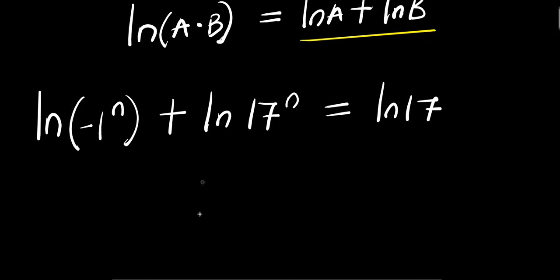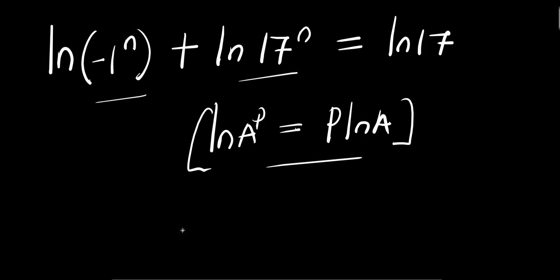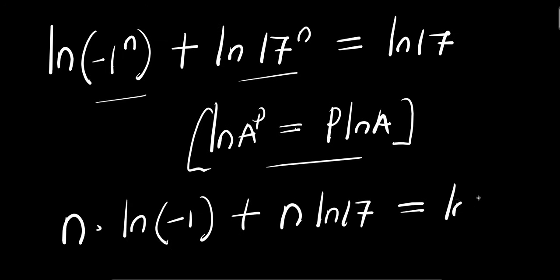Also, if you have natural log of a to the power b, this equals b times natural log a. Applying this right here, I will simply have n times natural log of negative 1 plus n times natural log of 17 equals natural log of 17.